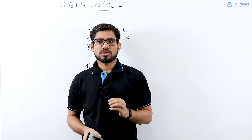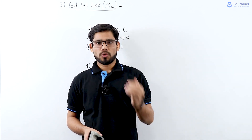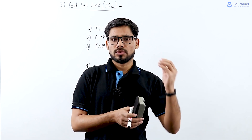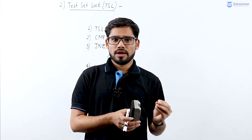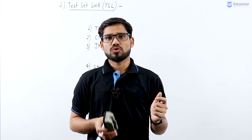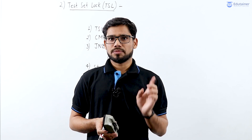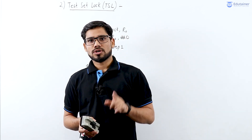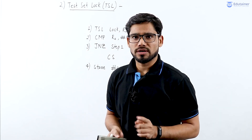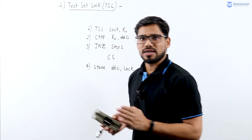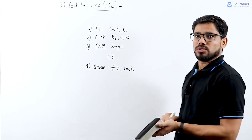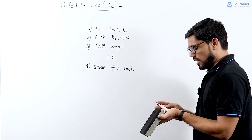To provide mutual exclusion and progress, we need to improve upon the lock variable code. For that purpose, we have introduced a new synchronization solution — a busy-waiting solution called Test-Set Lock (TSL). TSL is a busy-waiting synchronization mechanism technique used to remove the drawback of lock variable.